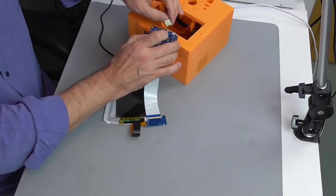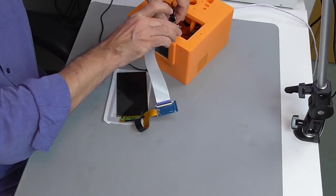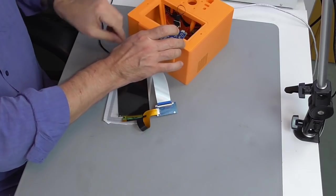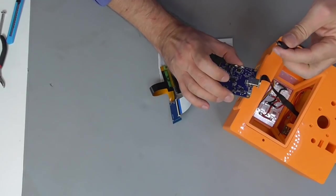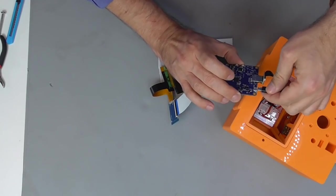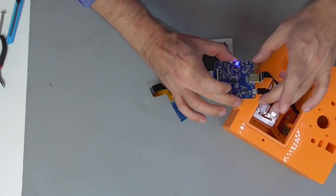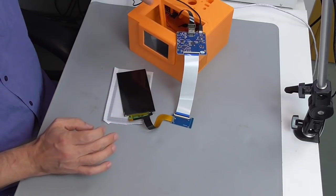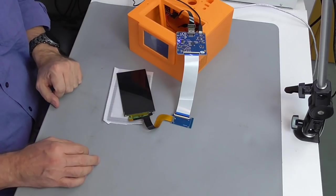All that is left to do for a first test is to connect the HDMI driver board via an HDMI cable with the Raspberry Pi and also to provide some power via the micro-USB port.